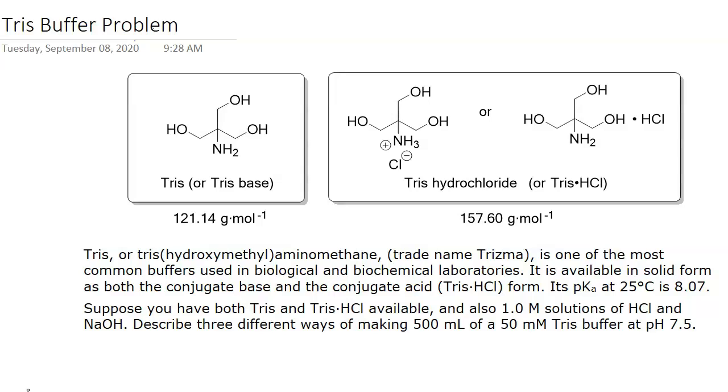So one of the most common buffers used in biochemical and biological laboratories is Tris. The Sigma brand name for that is Trisma. It's also known as Tham, T-H-A-M. It's sometimes used medically, but we're just going to focus on the use as a buffer. You can buy Tris both in the conjugate base form and the conjugate acid form. Those are shown here on the screen along with their molecular weights.